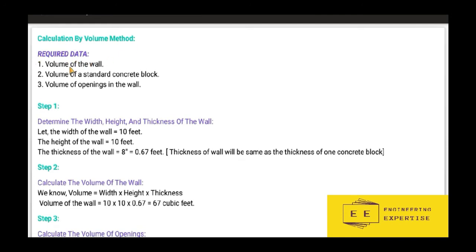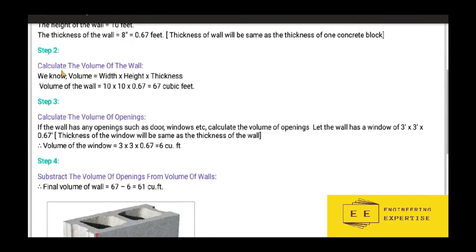Let's calculate the number of blocks using the volume method. Required data for calculation of blocks: volume of the wall, volume of the standard concrete block, and volume of opening in the wall if there is a door or window. Step one: determine the width, height, and thickness of the wall. Let the width of the wall be 10 feet, the height 10 feet, and the thickness 8 inches, which is 0.67 feet.